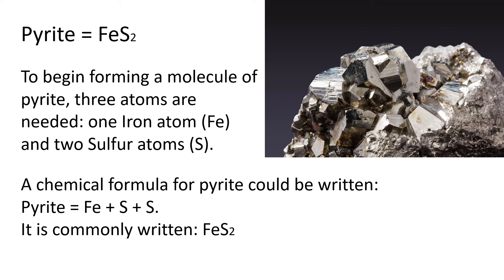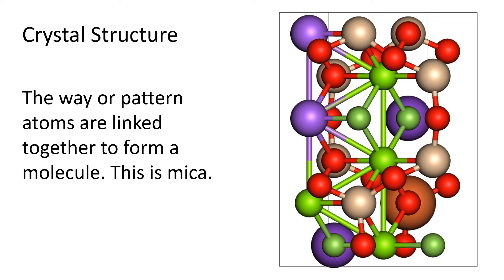The last item in the definition of mineral is crystal structure. This describes the way or pattern atoms are linked together to form a molecule. A large number of molecules must link together for a crystal to grow large enough to see. Atoms come in different sizes, so a hydrogen atom is a different size than an aluminum atom. Because atoms have different sizes, when one atom combines with another atom, they will link together in a unique pattern.